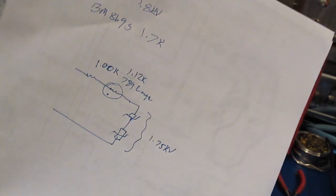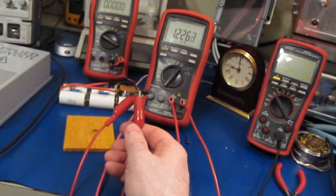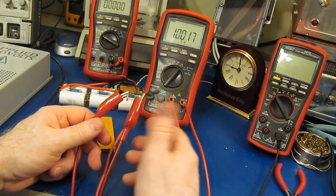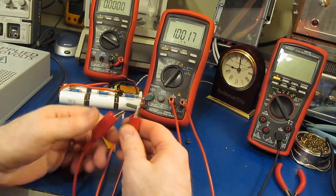This thing started out at 1.12. Let's check our resistor. It should have been 1.00K, and you can see it's still spot on.